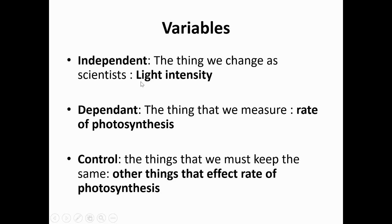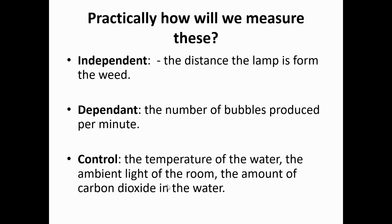For this investigation: the independent variable is light intensity, the dependent variable is the rate of photosynthesis, and the control variables are all of the other things that will affect photosynthesis. We only want to know how light intensity affects it, so we must keep all of those other things exactly the same. Practically, the independent variable — light intensity — we change by changing the distance from the lamp, measured with a ruler in centimeters. The dependent variable is the number of bubbles produced per minute.